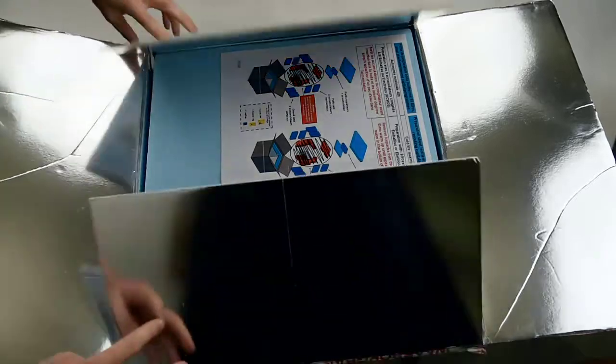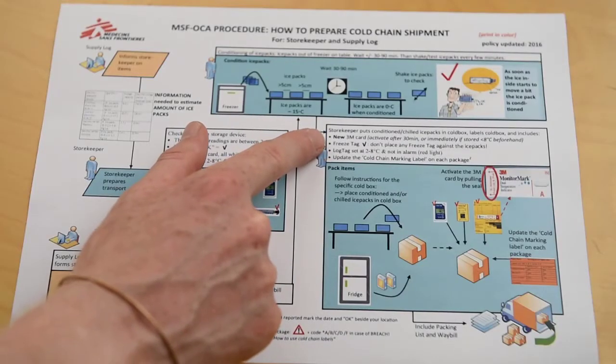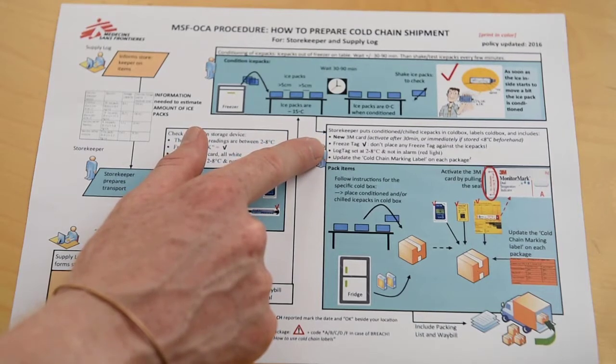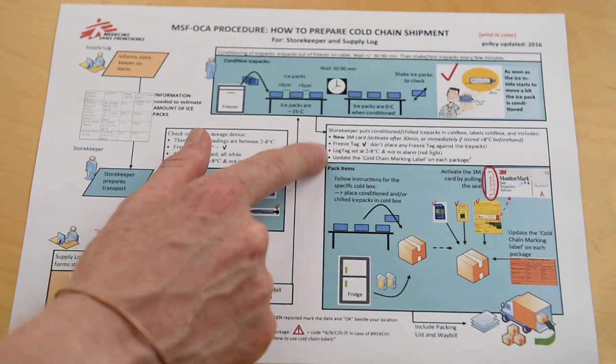The storekeeper puts conditioned or chilled ice packs into the cold box to be used for transport, labels the cold box, and adds the following items: an activated 3M card, a freeze tag, and a lock tag. And updates the cold chain marking label.